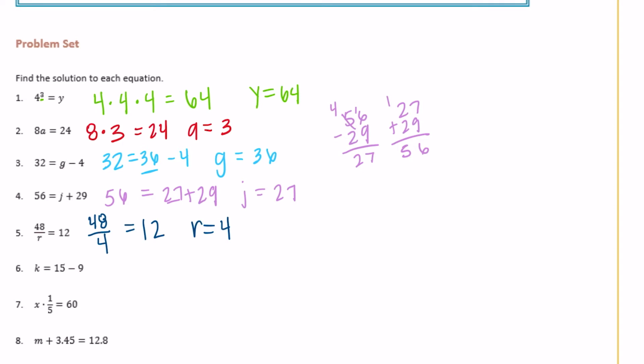Number 6: k is equal to 15 minus 9. So what is 15 minus 9? Well, 15 minus 9 would be 6, so k is equal to 6.